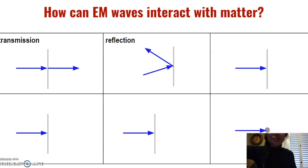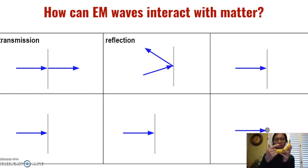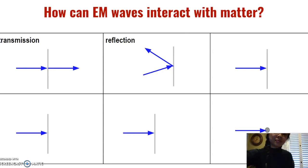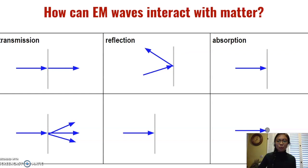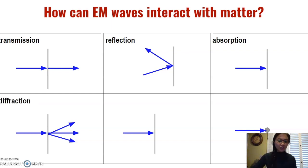For example, a banana is yellow because the light reflecting off the banana is yellow. The next example of an EM interaction with matter is if the EM wave is simply absorbed by the second material. This is known as absorption. EM waves can also spread in different directions as they pass through another medium. This is known as diffraction.